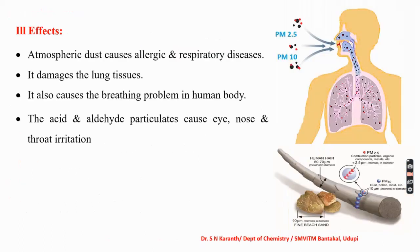What are the ill effects of particulate matter? The major effect is respiratory problems. Atmospheric dust causes allergic and respiratory diseases. Particulate matter with a size ranging from 2.5 to 10 microns can be easily inhaled. Human hair is around 50 to 70 microns in diameter, whereas fine beach sand is about 90 microns — so these dust particles are very thin. Combustion particles and organic materials are around 2.5 microns in size, meaning they can easily be inhaled, causing allergic or respiratory diseases. Even pollen, with a size less than 10 microns, causes allergic or respiratory diseases when inhaled.